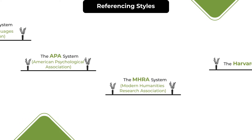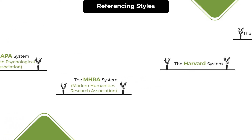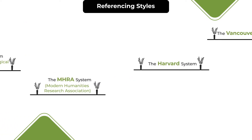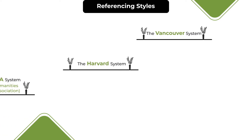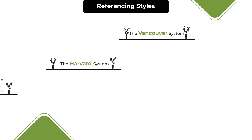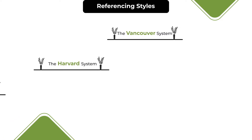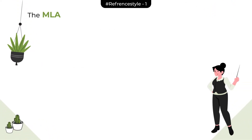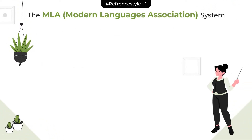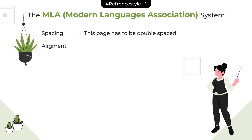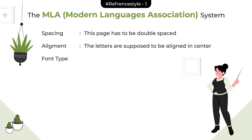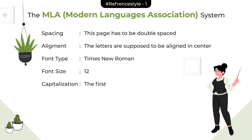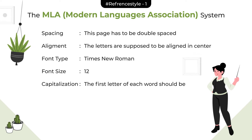Different universities may demand different referencing styles in their dissertations, and this further affects the creation of your title page. So remember to format your title page accordingly. For example, look at these styles and how they affect your dissertation title page. The MLA system does not require you to add a first page as such.